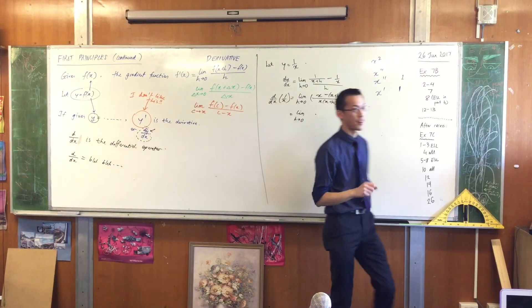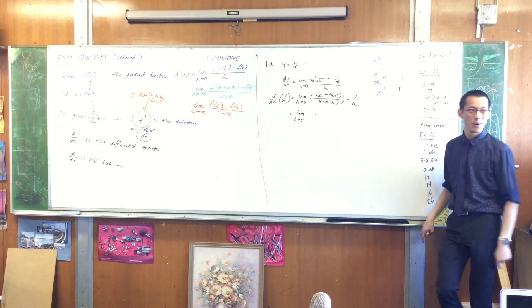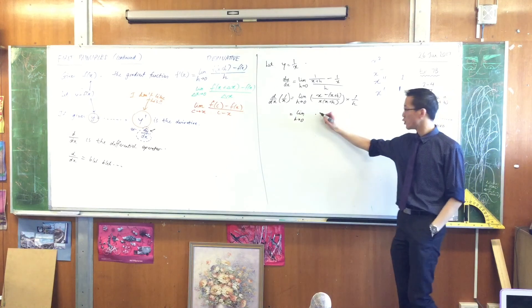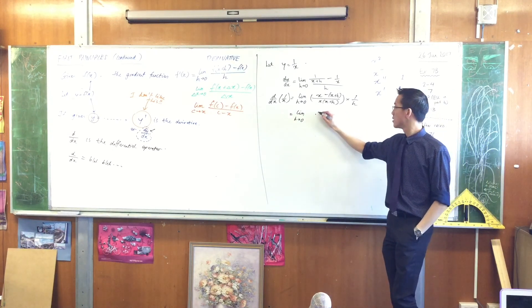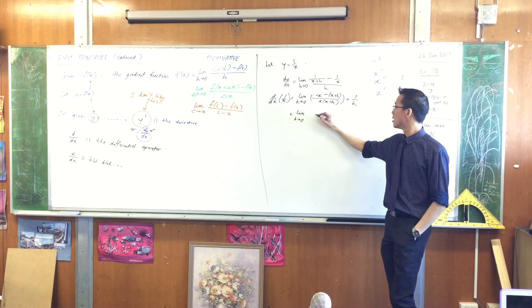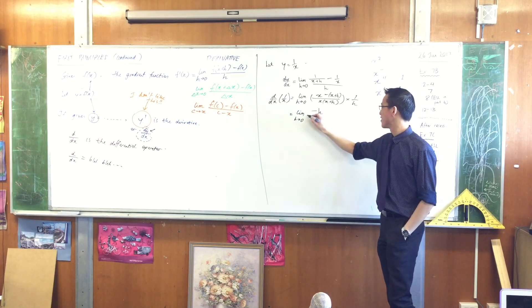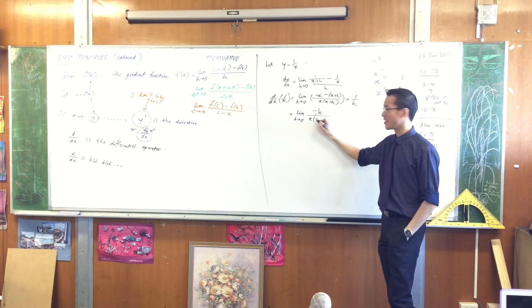Can someone help me simplify this fraction that I get here? What have I got? Yeah, Eric. Well, on the top, the x's cancel out. Good. Which leaves you with? h. What's with the h? Sorry, minus h. Good.